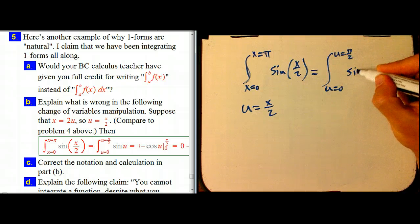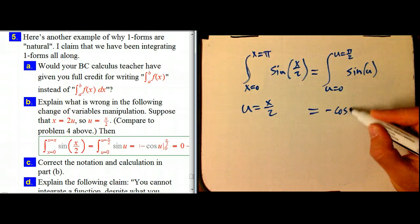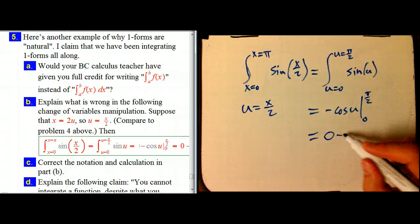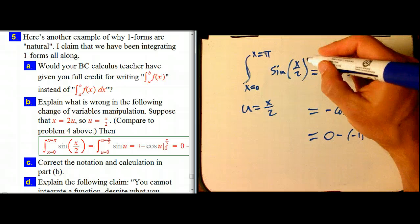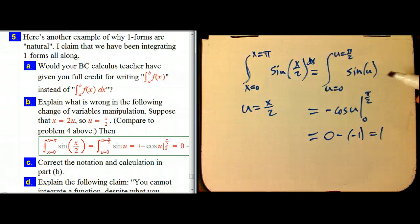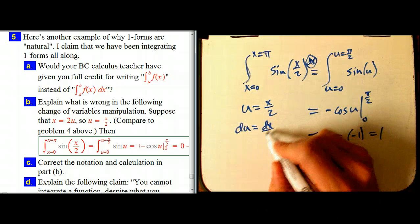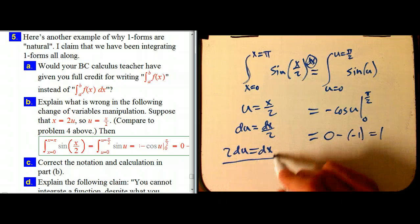And then they put in sine of u. It's good. Now that's something we know the antiderivative of. It's minus cosine u from 0 to π over 2. That's 0 minus a minus 1, because of this minus sign, is 1. That's the wrong answer. And hopefully, what I was saying in the previous part makes it pretty obvious what we're forgetting is the dx.